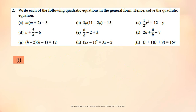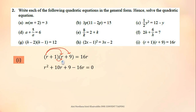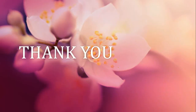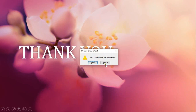For the last question, I, expand the bracket first. Don't forget to bring the constant term to the left side. This gives the general form; factorize it to get the value of R equals 3. That's all for exercise 1.1f. Thank you and see you in the next video.